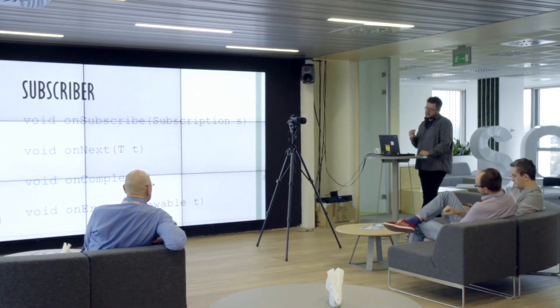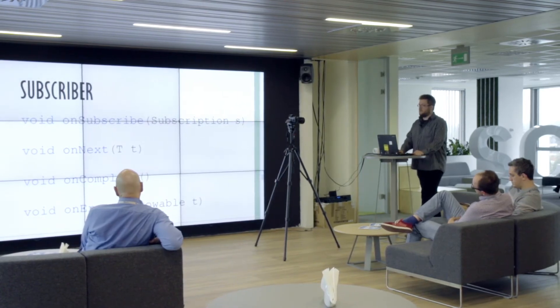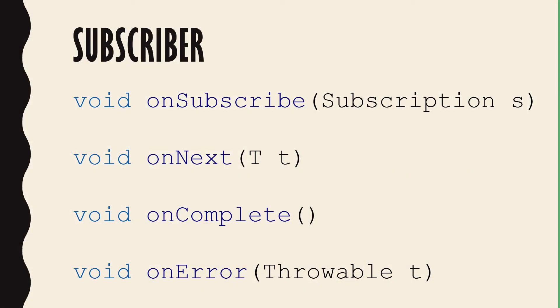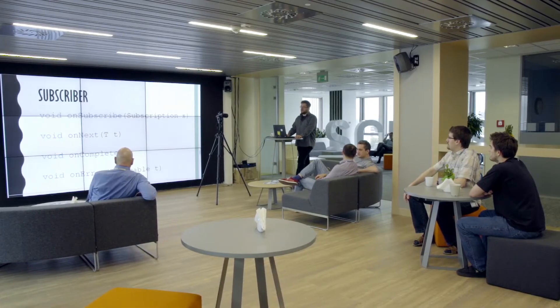The first one is Subscriber. It has just four methods. The first one, onSubscribe, has a subscription object that connects a subscriber and publisher. It has an onNext listener, which listens for items from the subscription. It has an onComplete listener, which waits for the completion of the given stream. And it has an onError, which works like onComplete but also carries information that an issue occurred and that the publisher stops publishing another event.